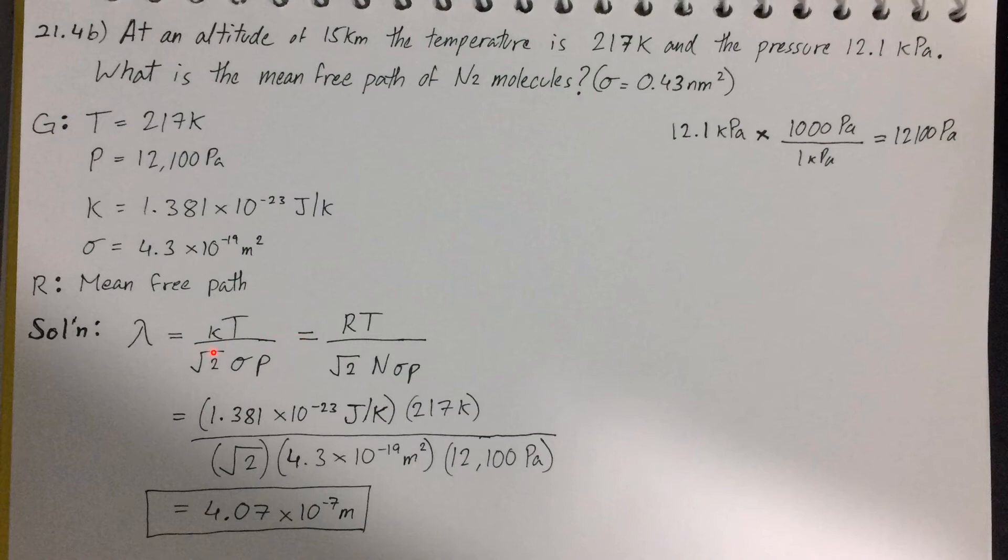k here is the Boltzmann constant, T is the temperature, sigma here is the collision cross-section, and P is the pressure. However, you may also use the second formula, and it should give you the same answer.